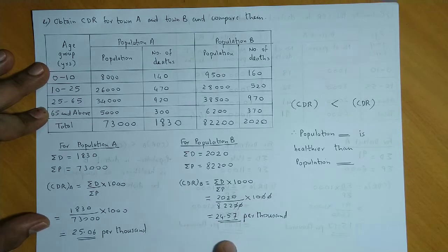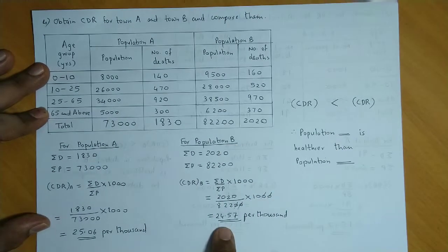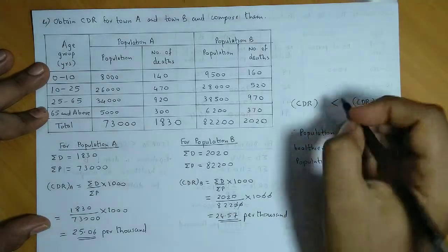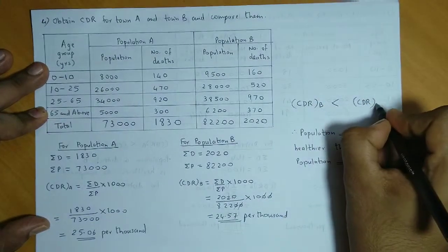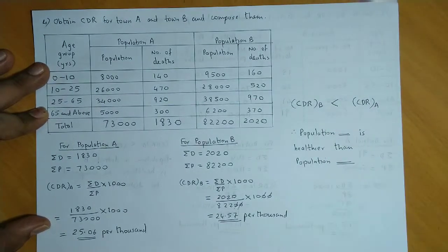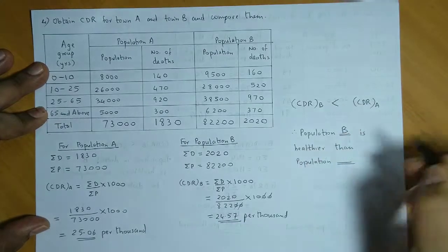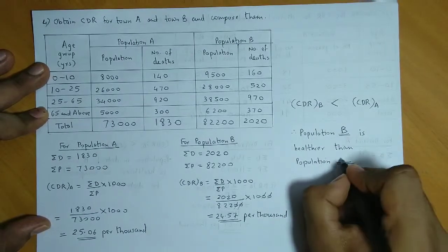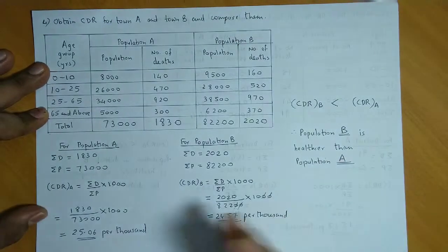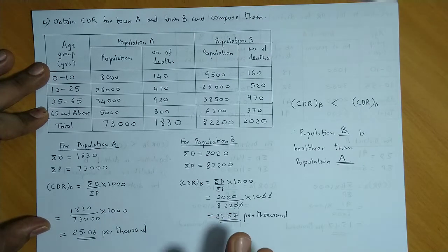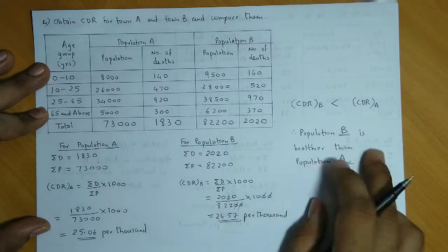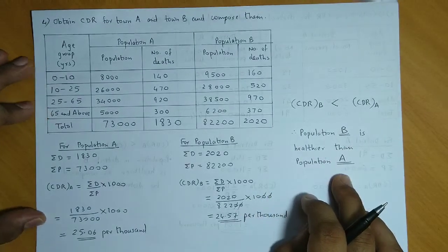So CDR of A is obtained, CDR of B is obtained. Now if you compare it, B's death rate is less. Correct, so CDR of B is less than CDR of A. Obviously, where the death rate is lower, that population will be healthier. So therefore I can say population B is healthier as compared to population A. You have to find CDR for both A and B. Whichever has less CDR, that population is healthier. In this case, population B is healthier than population A.